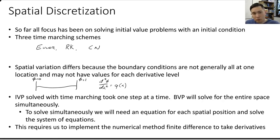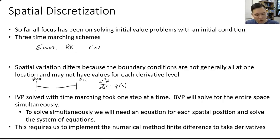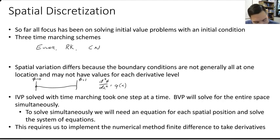So you could produce a shooting method where you're estimating dφ/dx, propagate from one edge to the other, and update. But the other option is to solve the boundary value problem simultaneously — saying we have approximate values of our temperature at a discrete set of points.